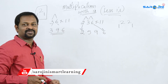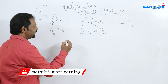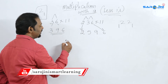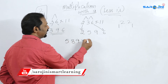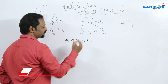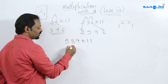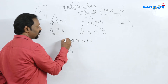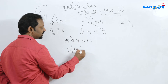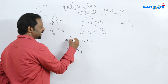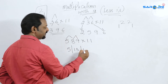So in this format, we will add that. 5, 8, 9 is multiplied by 11. So first 5. 5 plus 8 is 13. 8 plus 9 is 17.